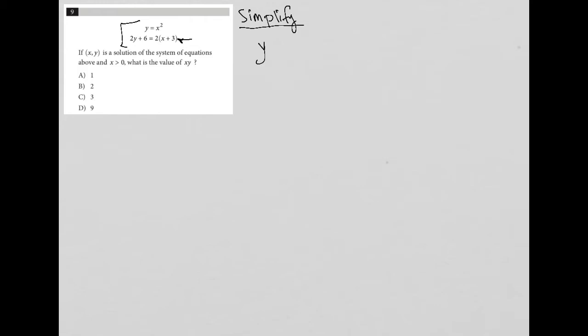So this first equation y equals x squared, that's simplified at least for y. The second equation however is not. So I'm going to take this 2y plus 6 equals 2 parentheses x plus 3 and I'm going to simplify this equation.